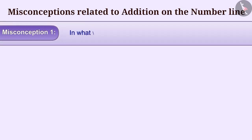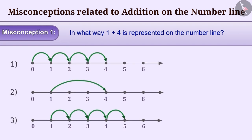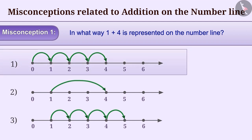Misconception 1: In what way is 1 plus 4 represented on the number line? While representing the addition of whole numbers on the number line, counting often starts from 0. This is a misunderstanding, and with this understanding, incorrect answer option 1 is chosen.